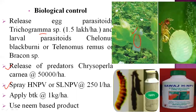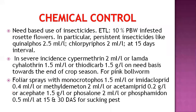Biopesticides used include HaNPV (Helicorpa armigera Nuclear Polyhedrosis Virus) against American bollworm and SlNPV (Spodoptera litura Nuclear Polyhedrosis Virus) against spotted bollworm, at 250 liters per hectare. Bacterial biopesticide Bt (Bacillus thuringiensis) is used at 1 kg per hectare. Botanical pesticides such as neem-based products are also used to control initial stages of larvae, eggs, and adults.